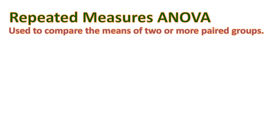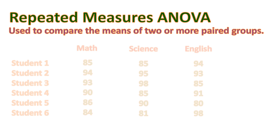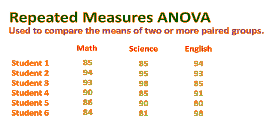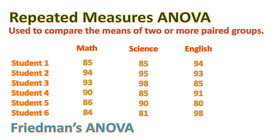Another formula used in research is Repeated Measures ANOVA. This is used to compare the means of two or more paired groups — similar to the paired samples t-test, although that is limited to two groups, while Repeated Measures ANOVA can be used for two or more. For example, we have math, science, and English scores — three paired groups — and all scores for each student must stay paired and cannot be interchanged. If the assumptions are not met, the non-parametric alternative is Friedman's ANOVA.